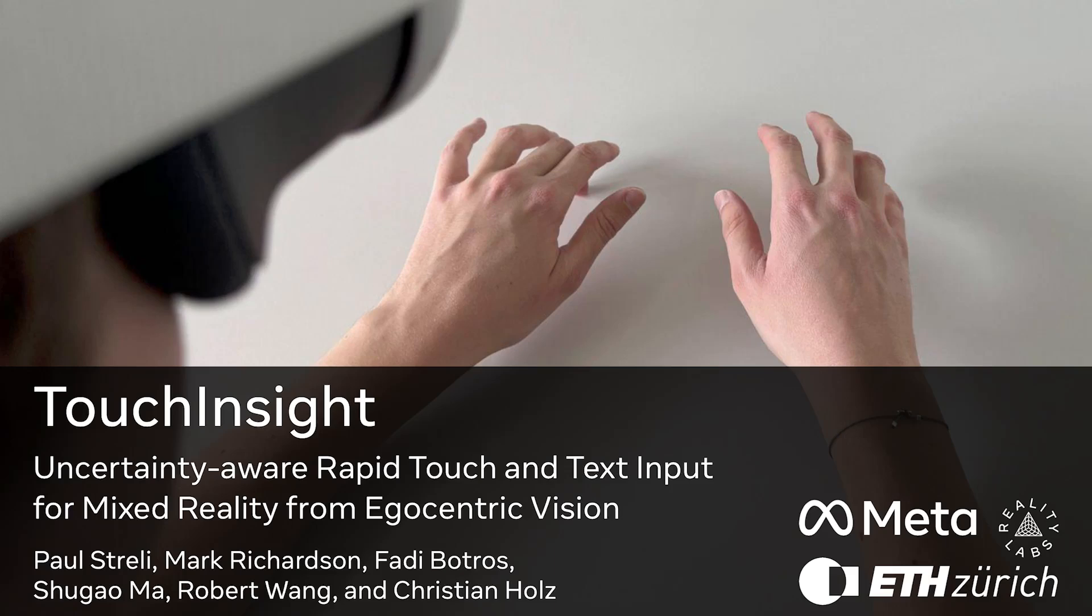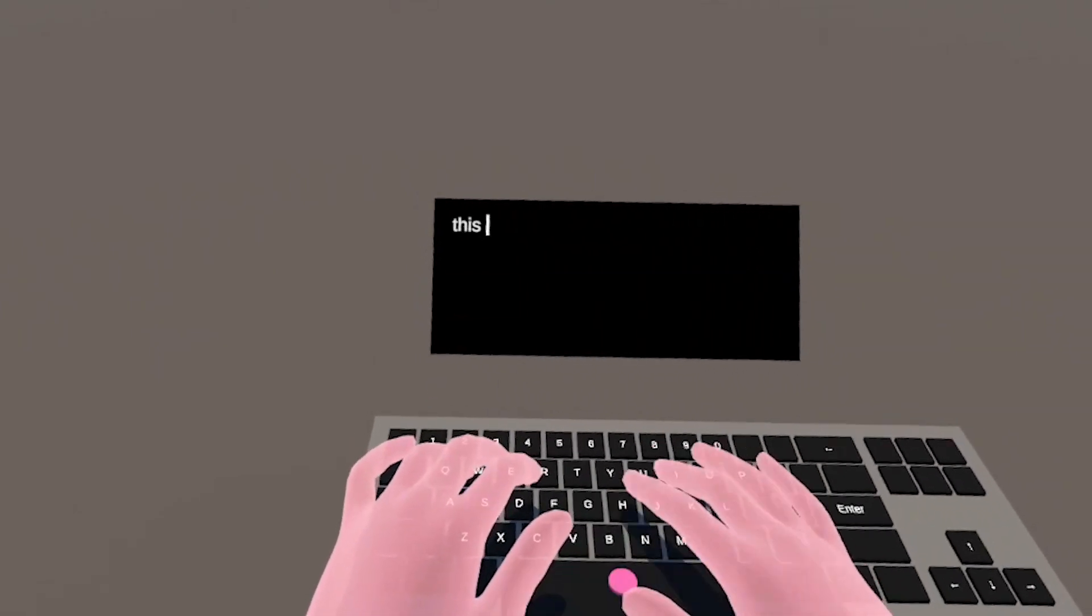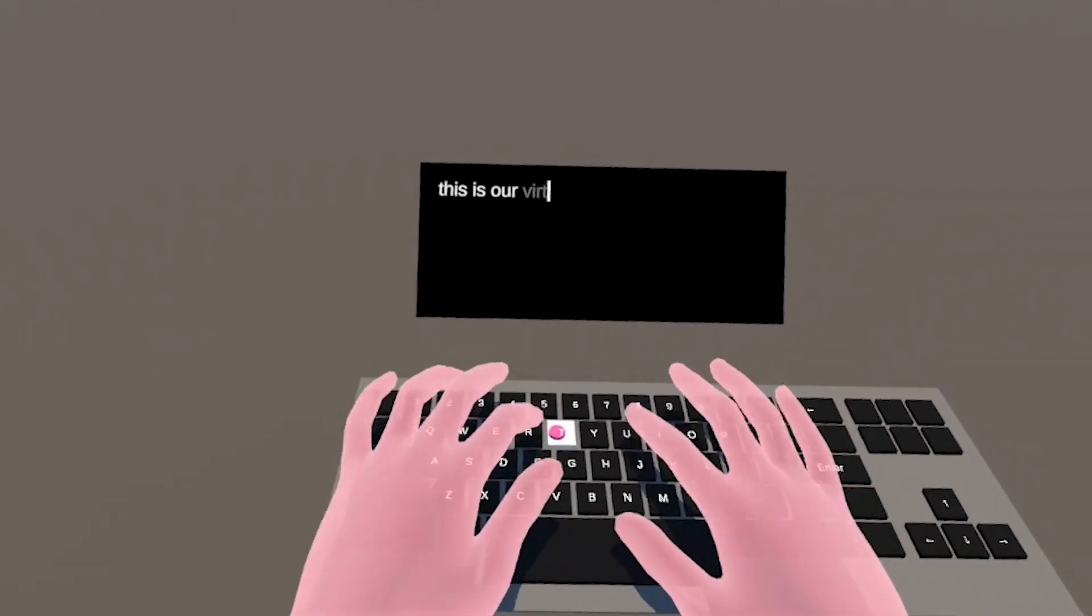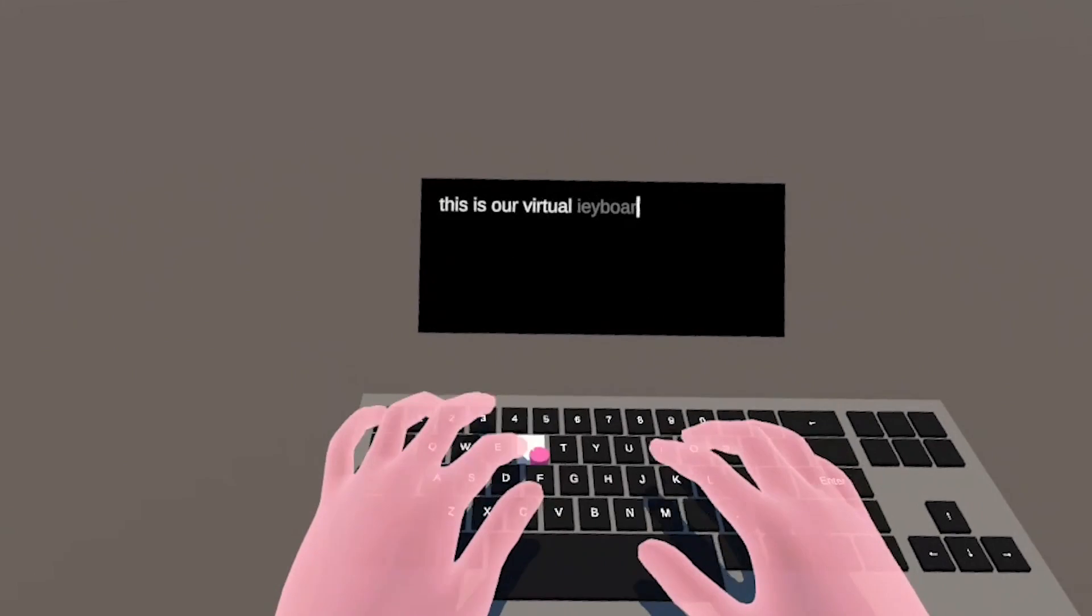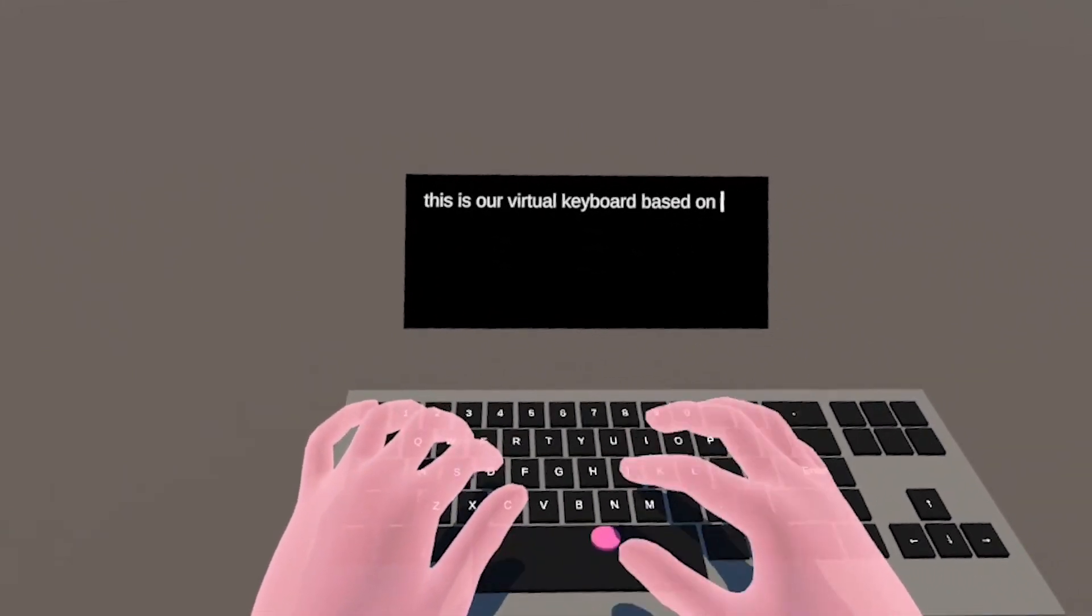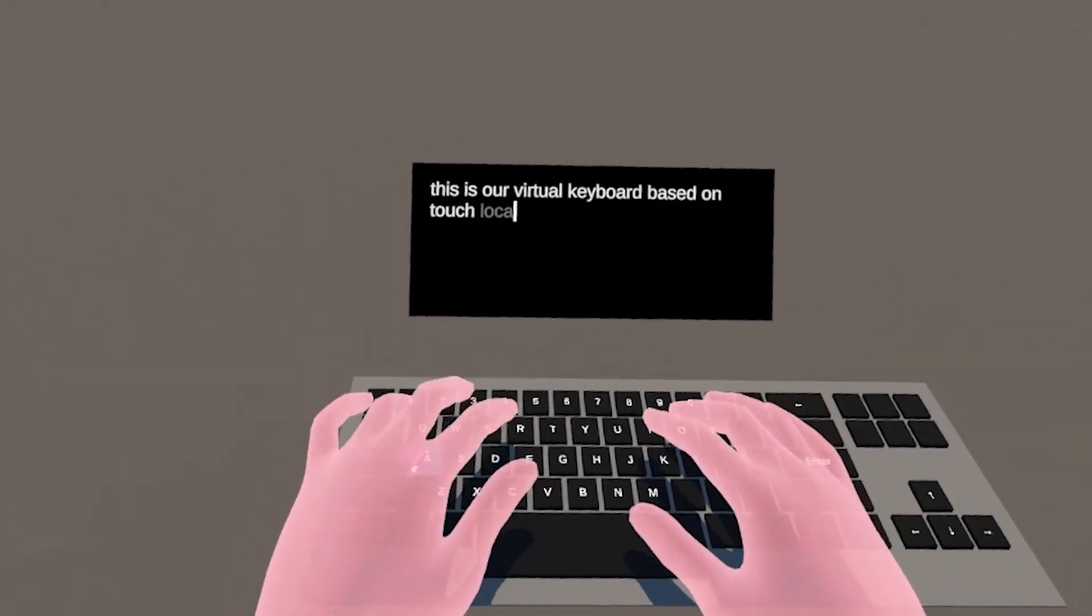We introduce a real-time pipeline to detect touch input on physical surfaces based on egocentric hand tracking. Our method Touch Insight resolves uncertainties about estimated touch locations in a probabilistic framework to enable text entry on a virtual surface keyboard.